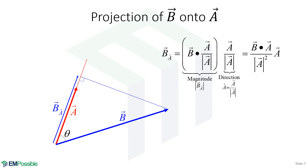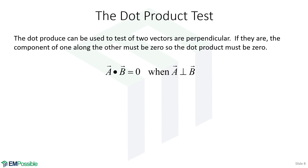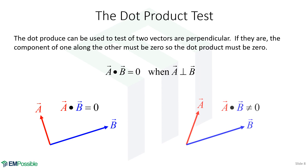Dot products are all about projections, though it's not exactly a projection because the magnitudes of both A and B affect the dot product. We can use the dot product as a test: if two vectors A and B are perpendicular, their dot product is zero. This is so common that people sometimes just say 'dot product is zero' to mean perpendicular. Any other time — when vectors are not perpendicular — the dot product will not be zero.